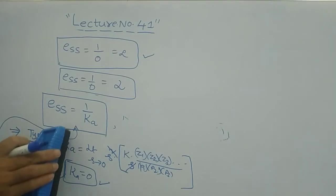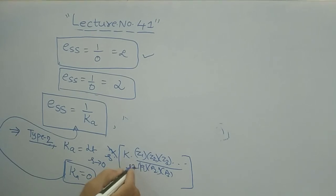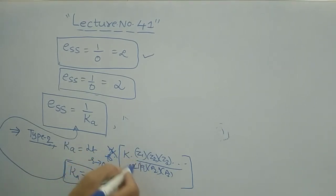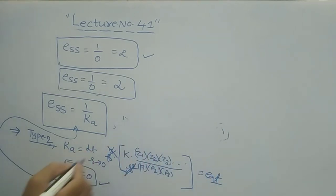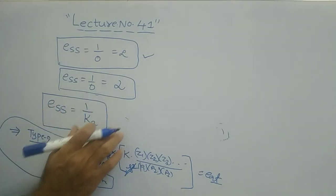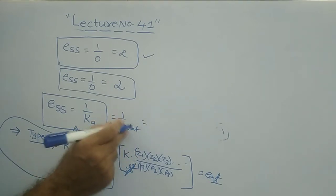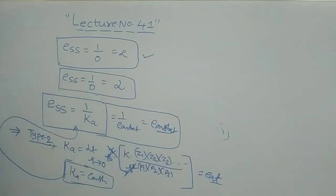For a type 2 system, G(s)H(s) has s squared in the denominator. In the Ka formula with s squared in the numerator, both s squared terms cancel completely, leaving only constants. The limit as s tends to 0 of a constant is a constant, so Ka is a constant (not zero). Therefore, ESS equals 1/Ka equals 1/constant, which is a constant. For type 2 system with unit parabolic input, ESS is a finite constant value.